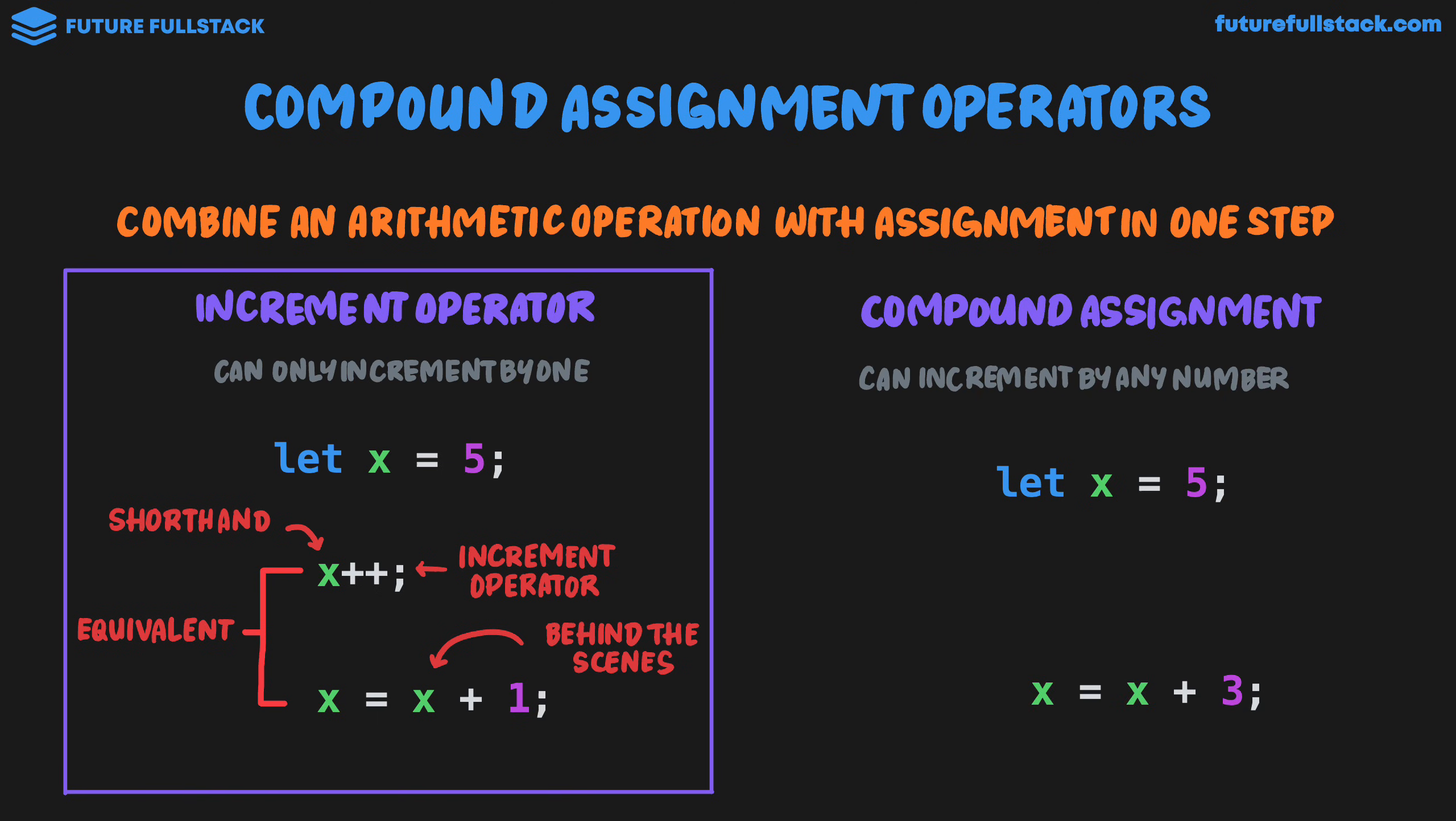But we do know there's a longhand way of achieving this. We could write x equals x plus 3. That would effectively increment x by 3, giving it the value 8. But just like there's a shorthand when incrementing by 1 with the increment operator, there's also a shorthand for this using compound assignment. And it looks like this: x plus equals 3.